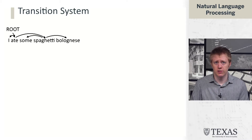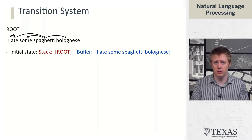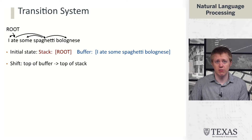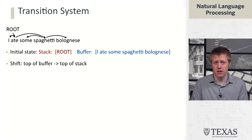We start off with an initial state where the stack just contains a single root symbol and the buffer contains all of the words in our sentence. Our running example is going to be 'I ate some spaghetti bolognese.' The only kind of unique thing about this example is that spaghetti is actually the head of the noun phrase — typically the heads of noun phrases come at the end, but spaghetti bolognese is a borrowed term from Italian and retains the Italian word ordering. The first thing we do is a shift operation, which moves items from the top of the buffer and puts them on top of the stack.